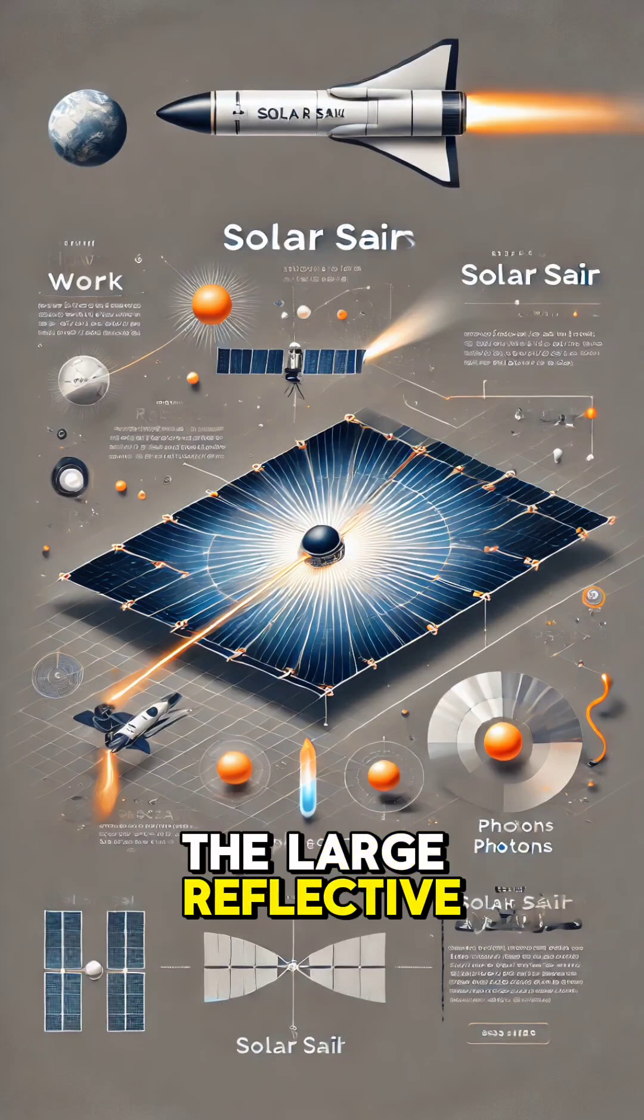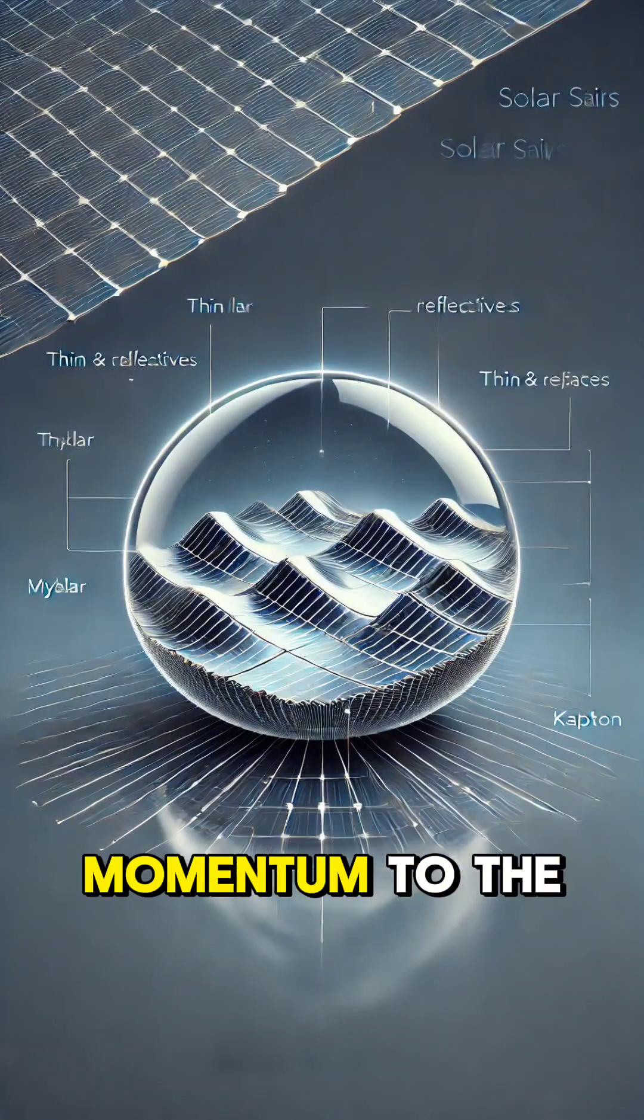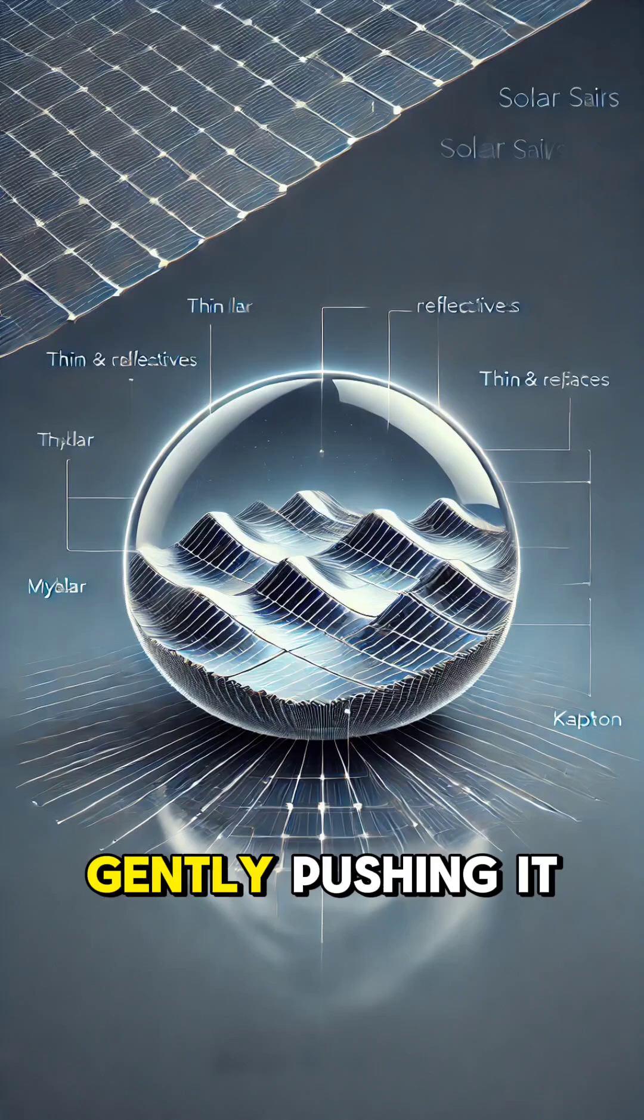When they hit the large reflective surface of a solar sail, they transfer that momentum to the spacecraft, gently pushing it forward.